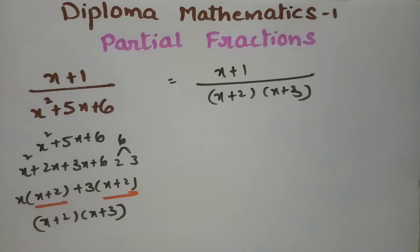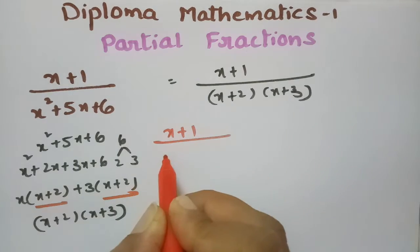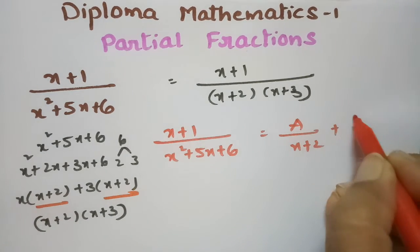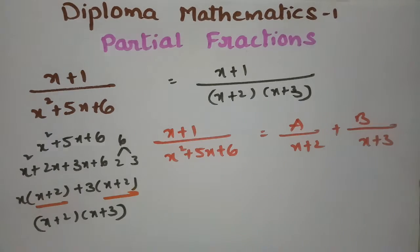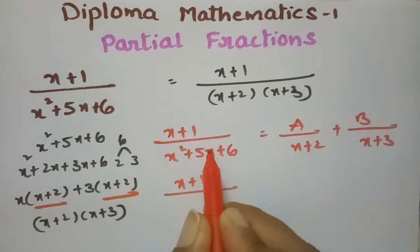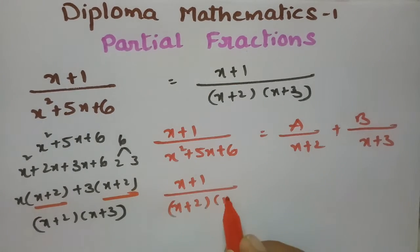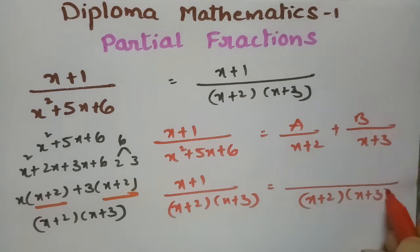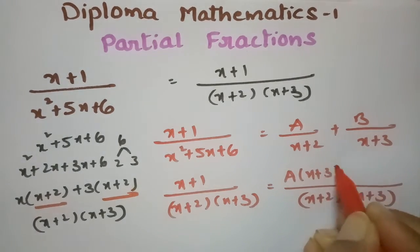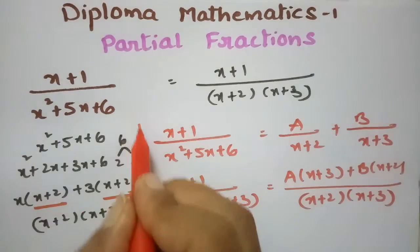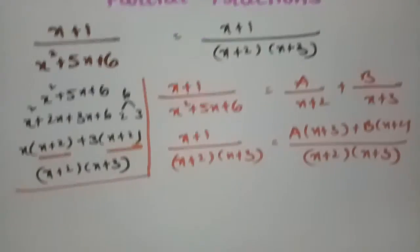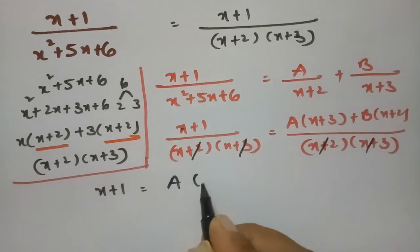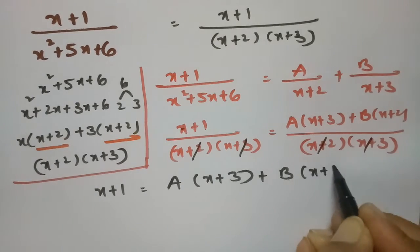Now I split this into partial fractions: (x+1) / (x²+5x+6) = A/(x+2) + B/(x+3). Taking LCM as (x+2)(x+3) on the right side and cross-multiplying, we get: x+1 = A(x+3) + B(x+2).